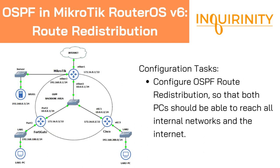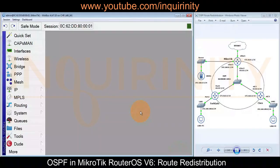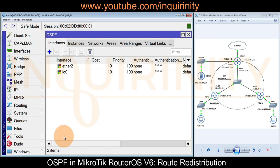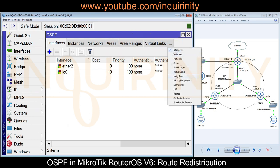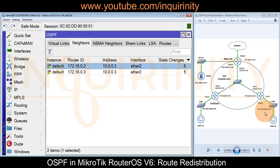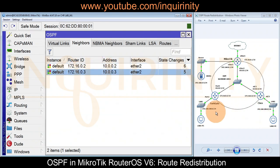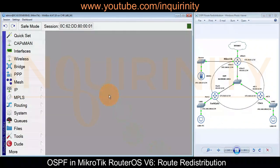As this is a Mikrotik tutorial, the devices FortiGate and Cisco have been pre-configured to redistribute routes. We will demonstrate how to configure redistribution in our Mikrotik Router. Let's verify from our Mikrotik Router if our OSPF is still working properly. We can go to Routing > OSPF and the Neighbors tab. We do have our Cisco Router as our neighbor and our FortiGate Firewall as also our neighbor.